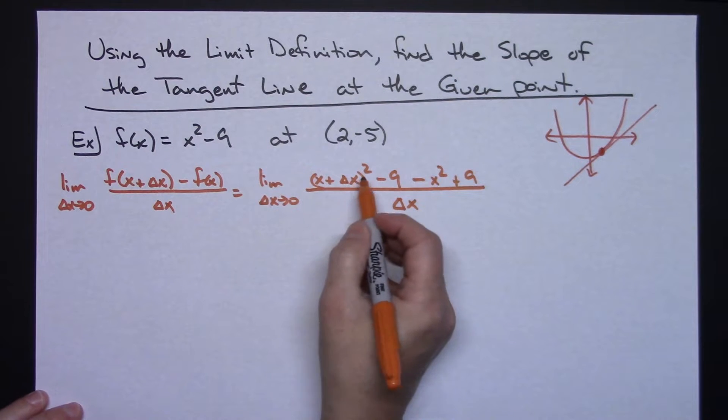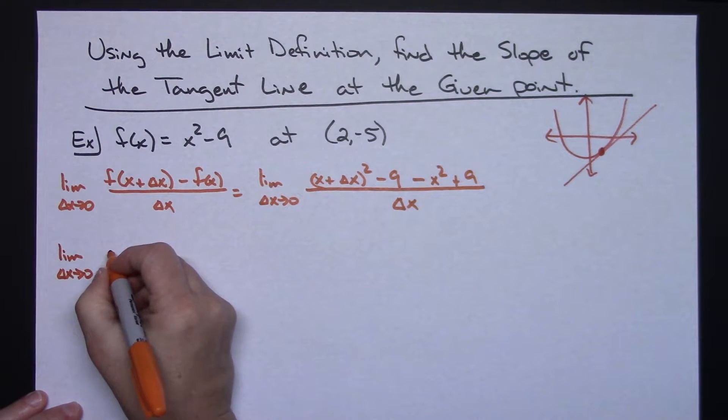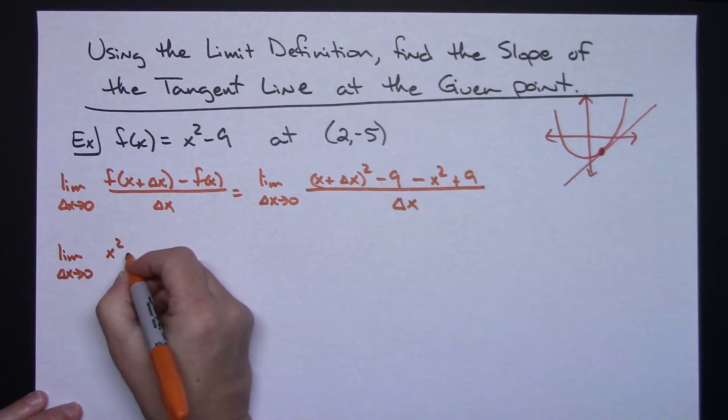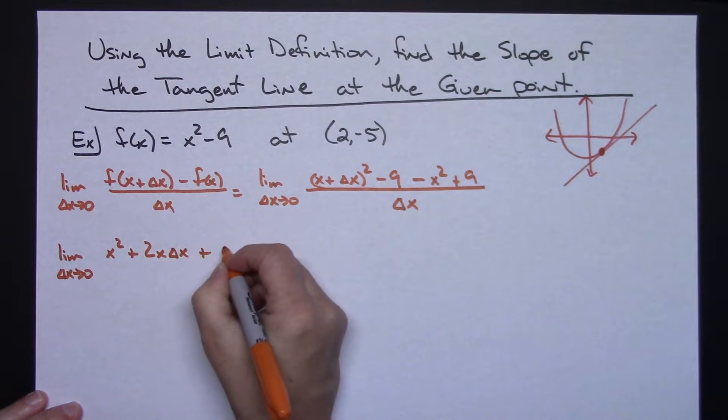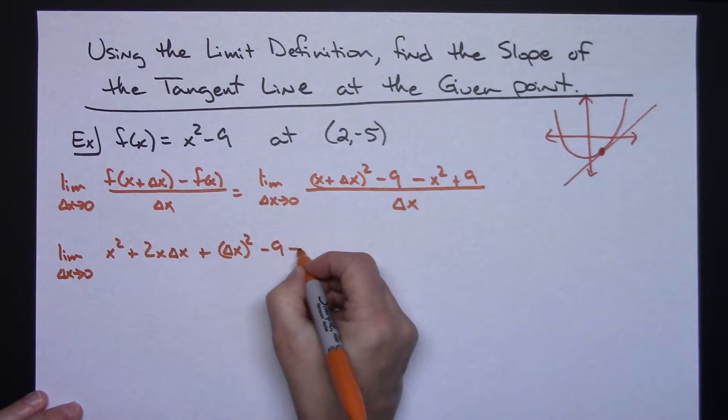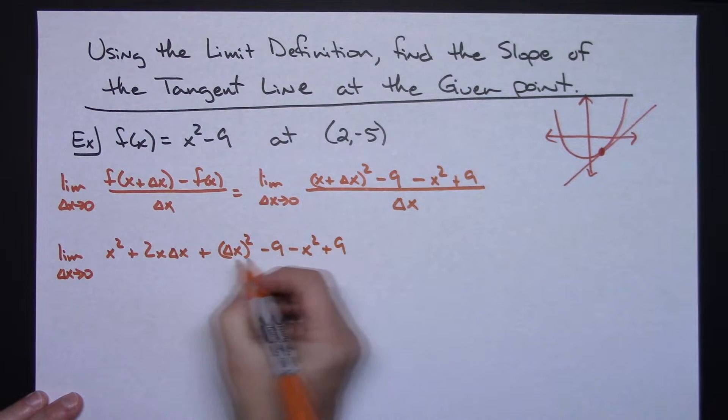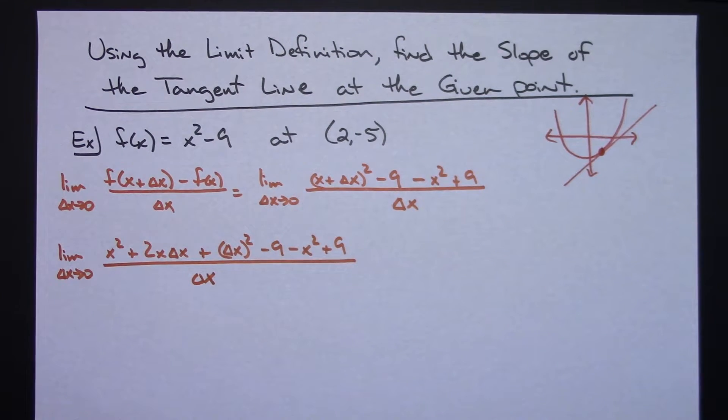This over here requires a FOIL. The limit as Delta X approaches 0, foiling that out I'm going to get an X squared plus 2X Delta X plus Delta X quantity squared and then I've got the minus 9 minus X squared plus 9 all over Delta X.